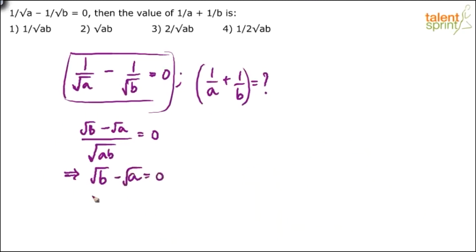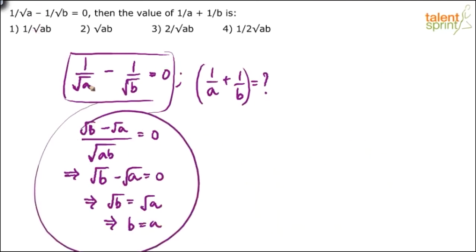From root B minus root A equals 0, we get root B equals root A, so B equals A. The only way that 1 by root A minus 1 by root B equals zero is when A and B are equal. Now substitute that back into the requirement: 1 by A plus 1 by B becomes 1 by A plus 1 by A, which is 2 by A.